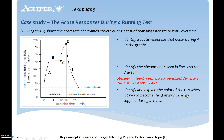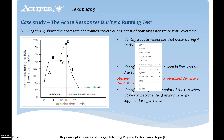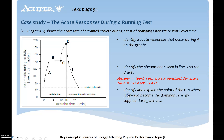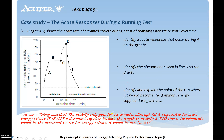Identify and explain the point in the run where fat would become the dominant energy system. Fat would likely become dominant during the recovery or EPOC stage, where we use oxygen to recover. However, since the activity only goes for about 15 minutes, fat is not a dominant supplier during the run itself — carbohydrate would be the dominant source because the length of activity is too short for fat to dominate.